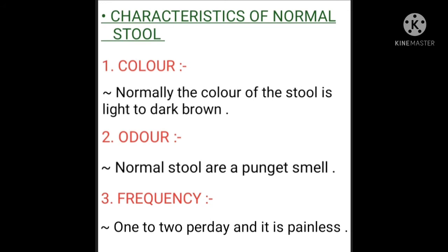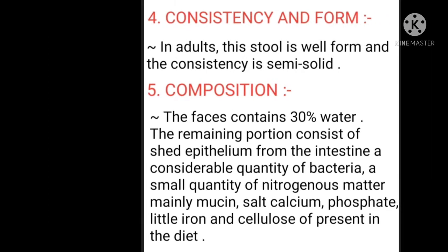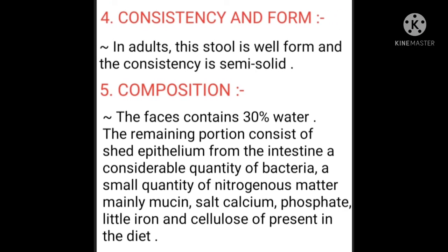Characteristics of normal stool — first is color: normally the color of stool is light to dark brown due to the presence of bile pigment. Second is odor: normal stools have a pungent smell. Third is frequency: a person mainly passes bowels once or twice a day, and it is painless. Fourth is consistency and form: in adults, stool is well-formed and semi-solid in consistency.